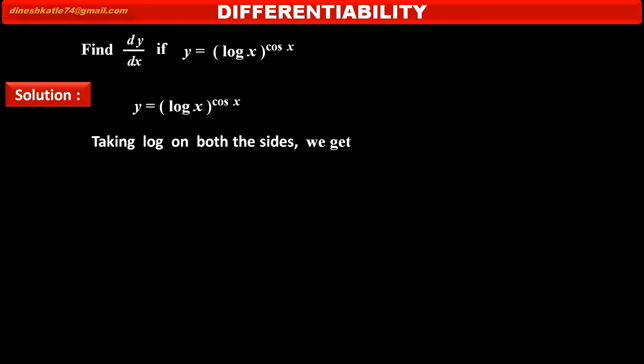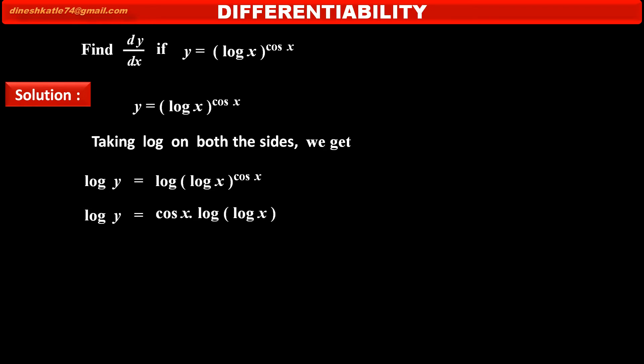Taking log on both sides, we get: on the left hand side, log y; on the right hand side, log of (log x)^(cos x). By using the log exponent law, we can shift the index cos x to the front, so we can write: log y = cos x · log(log x).